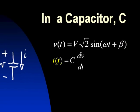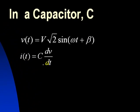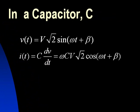How do we find the current? Using this expression, the current in the capacitor is C dV/dt. We differentiate the voltage, and this is what we obtain.